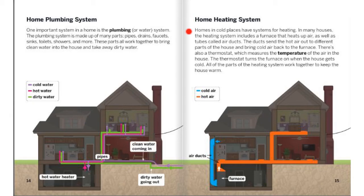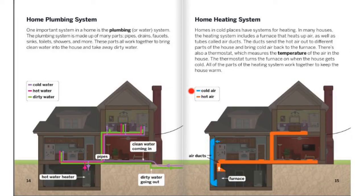Home heating system. Homes in cold places have heating systems for heating. In many houses, the heating system includes a furnace that heats up air, as well as tubes called air ducts. The ducts send the hot air out to different parts of the house and bring cold air back into the furnace. There's also a thermostat which measures the temperature of the air in the house. The thermostat turns the furnace on when the house gets cold. All of the parts of the heating system work together to keep the house warm. Blue is for cold air, orange is for hot air. Air ducts. Furnace.